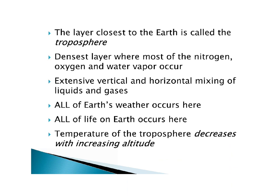The layer closest to the earth is the troposphere. It's the densest layer and it's where most of the nitrogen, oxygen, and water vapor in our atmosphere are mostly found. There is extensive vertical and horizontal mixing of liquids and gases within the troposphere — this will be important when we talk about air pollution and weather. All of earth's weather occurs here, 100% of it. All of life on earth occurs here. The temperature of the troposphere decreases with increasing altitude.